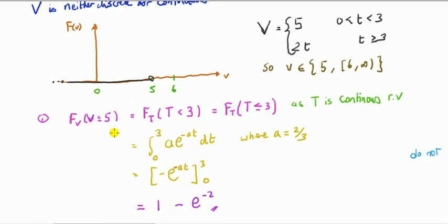First, we want to find the CDF of V when V is less than or equal to 5. I'm assuming you know the definition of CDF. I put a subscript V to say something about the CDF of V in relationship to what we know about T and the relationship between V and T. When is V less than or equal to 5? It's when T is less than 3, from what we said.